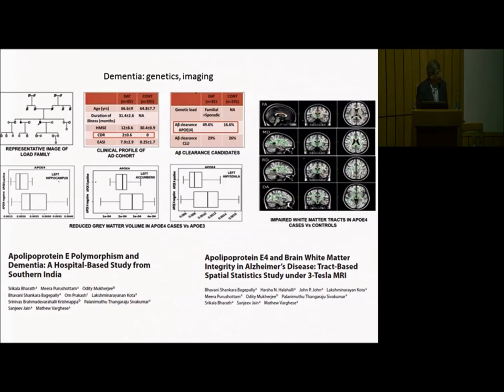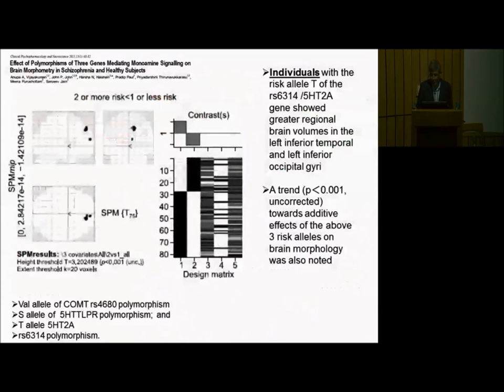That will be even more evident when you find that the 5-HT2A receptor polymorphism, which Panik just talked about, we looked at its effects on brain structure. The ones carrying the deviant allele showed greater brain volumes in the left inferior temporal and left inferior occipital regions, and if the person carried three risk alleles, the changes in brain volume were even higher. These were the COMT allele, serotonin transporter and 5-HT2A polymorphism and serotonin receptor genes.